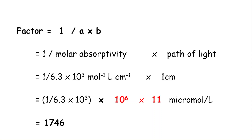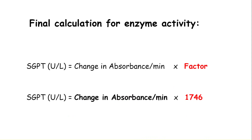This factor 1746 is what you see in the test kit or textbook during calculation of SGPT enzyme activity. Therefore, SGPT activity equals the change in absorbance per minute — obtained from the machine, analyzer, or spectrophotometer — multiplied by this constant factor 1746. In this way, we can calculate the factor for all analytes. Thank you very much.